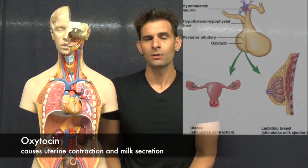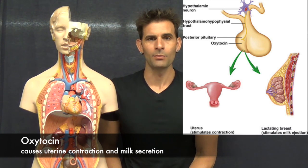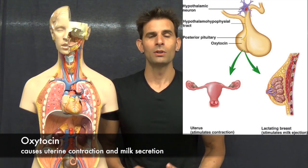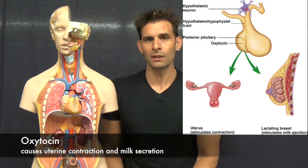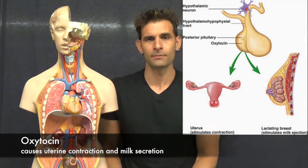Oxytocin is released during uterine contractions while giving birth to promote an increase in uterine contractions, as well as milk production and secretion.